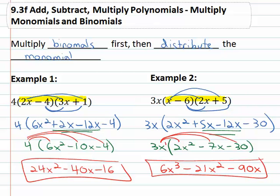So we have our final solution of 6x³ - 21x² - 90x. So several correct ways to get at the solution. My suggestion is to multiply the binomials first, and then distribute the monomial to finish the problem.